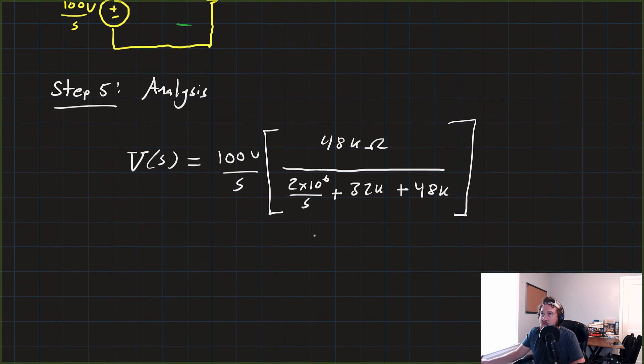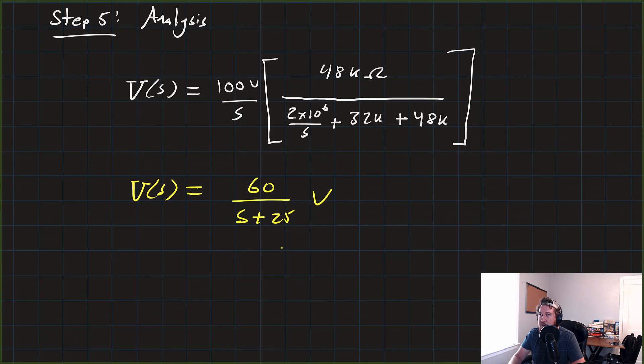And I'll leave it up to you to do the algebra to resolve this. But when you do, you're going to get that V(S) is equal to, quite simply, just 60 over S plus 25 volts. So there is our voltage in the S domain.